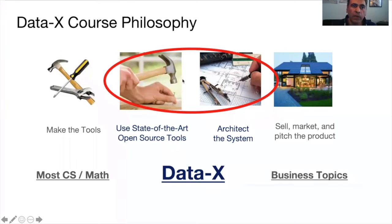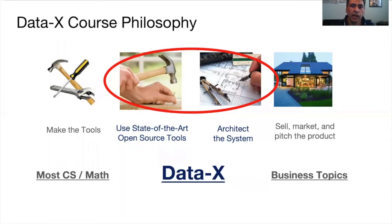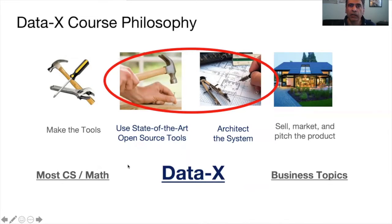Let me say a few words about the course philosophy. This course is different than most other courses that relate to data and data science. If you look at most computer science and math courses on a topic like this, they're designed to help you learn how to build the tools used in data science. The parallel is: if you were building a house, those are courses that teach you how to build a hammer or a saw. But this course is not about building the tools — it's about learning to use the state-of-the-art tools that already exist, and learning how to architect a system or application to put those pieces together.